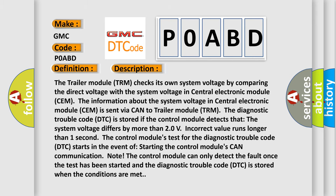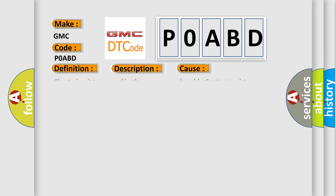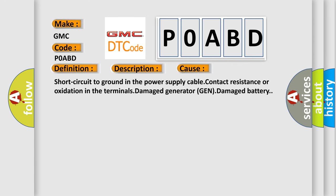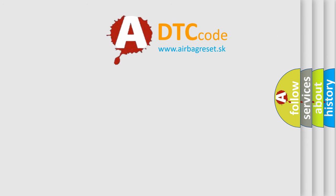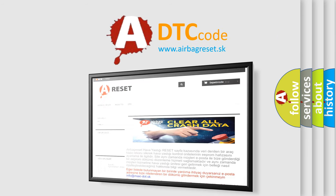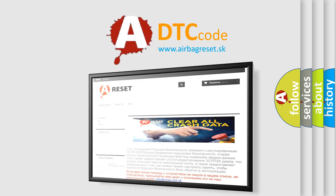This diagnostic error occurs most often in these cases: short circuit to ground in the power supply cable, contact resistance or oxidation in the terminals, damage to the generator GEN, or damage to the battery. The Airbag Reset website aims to provide information in 52 languages. Thank you for your attention and stay tuned for the next video.